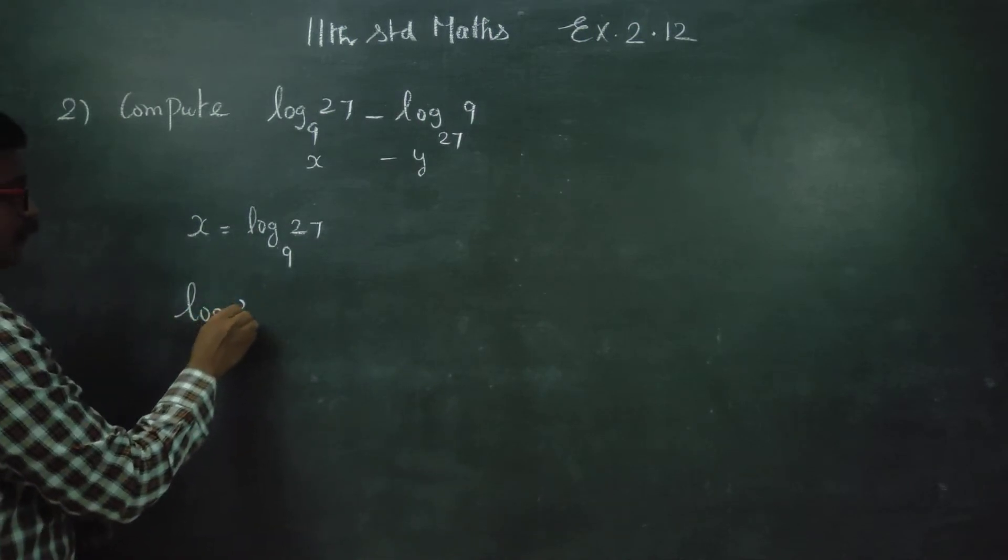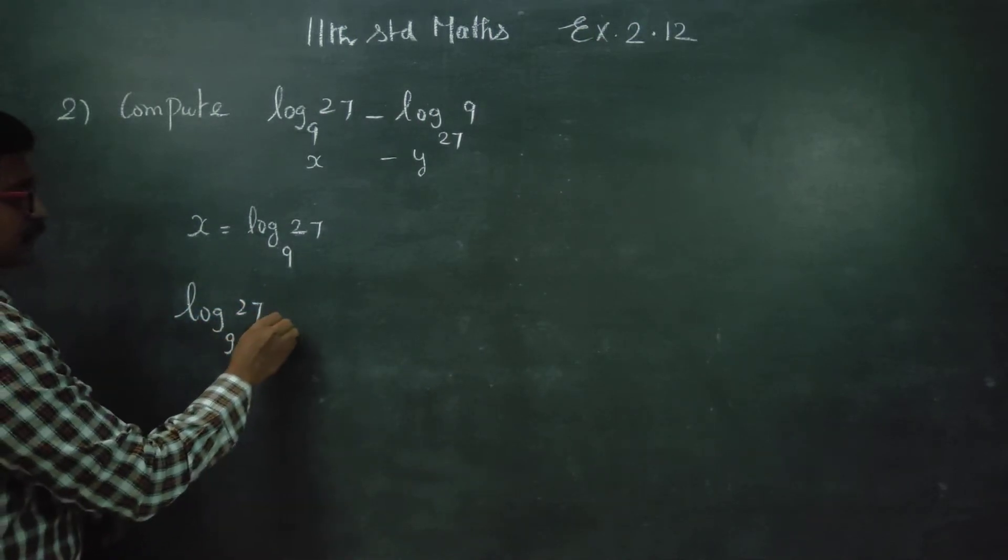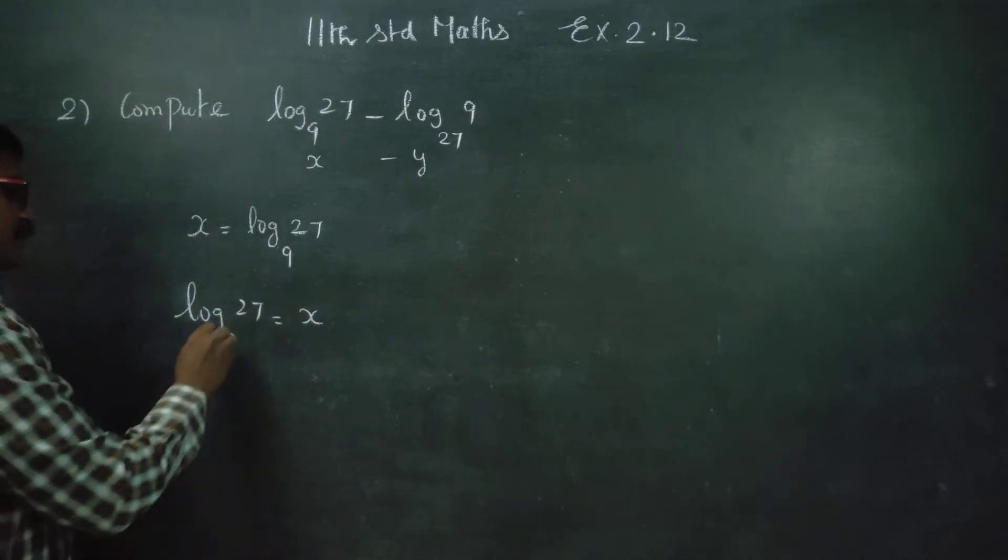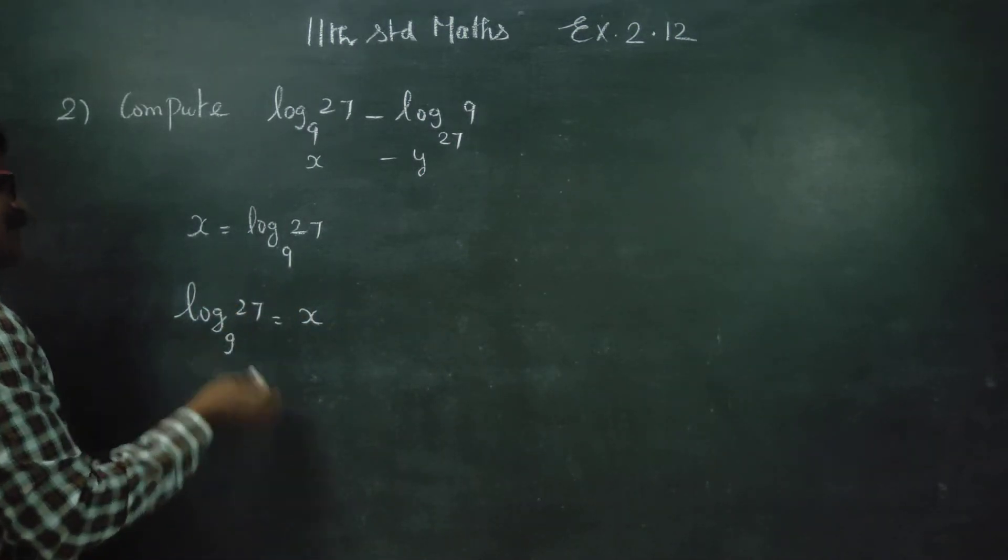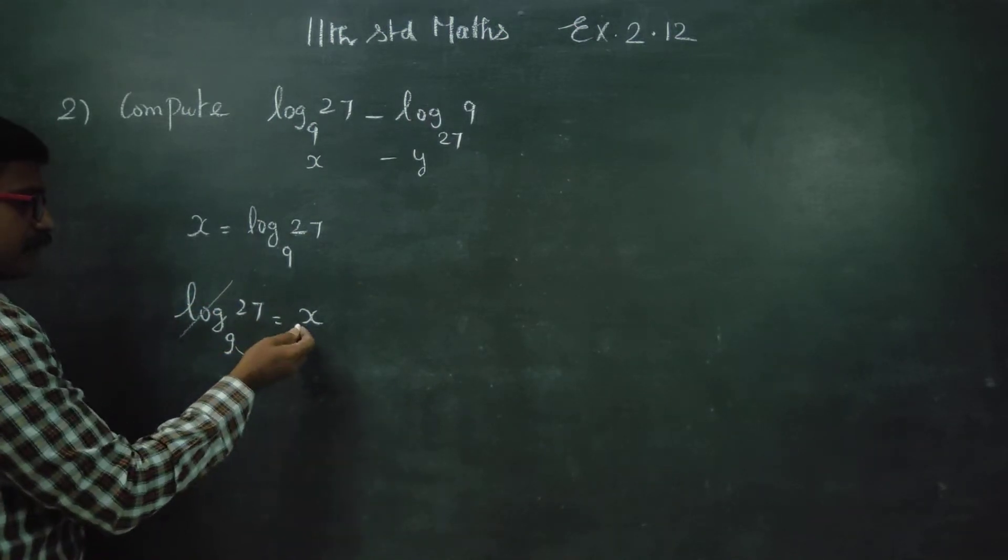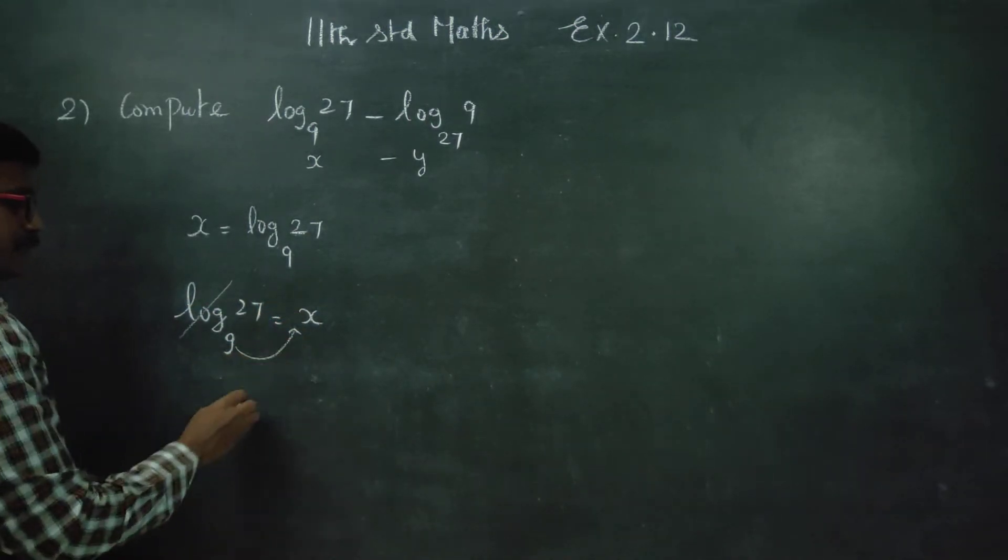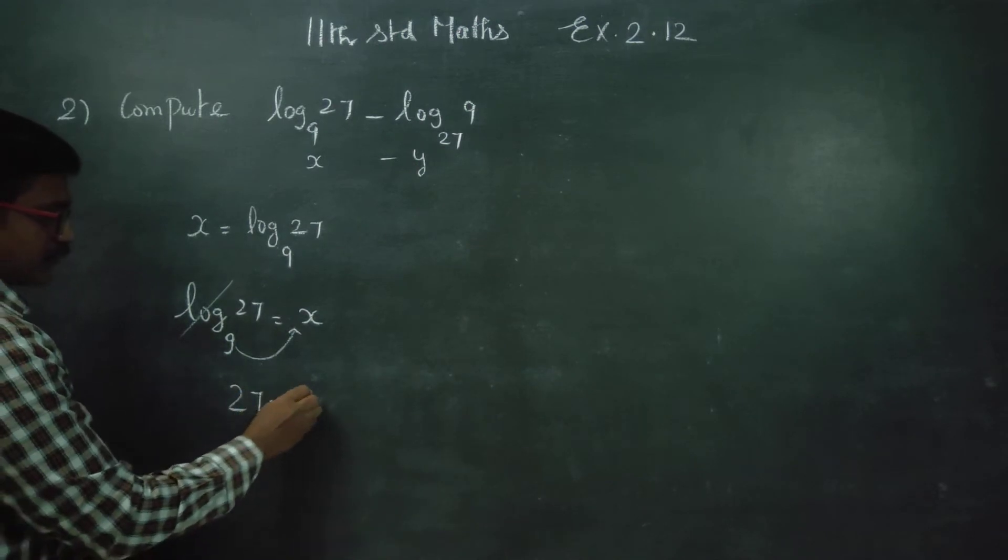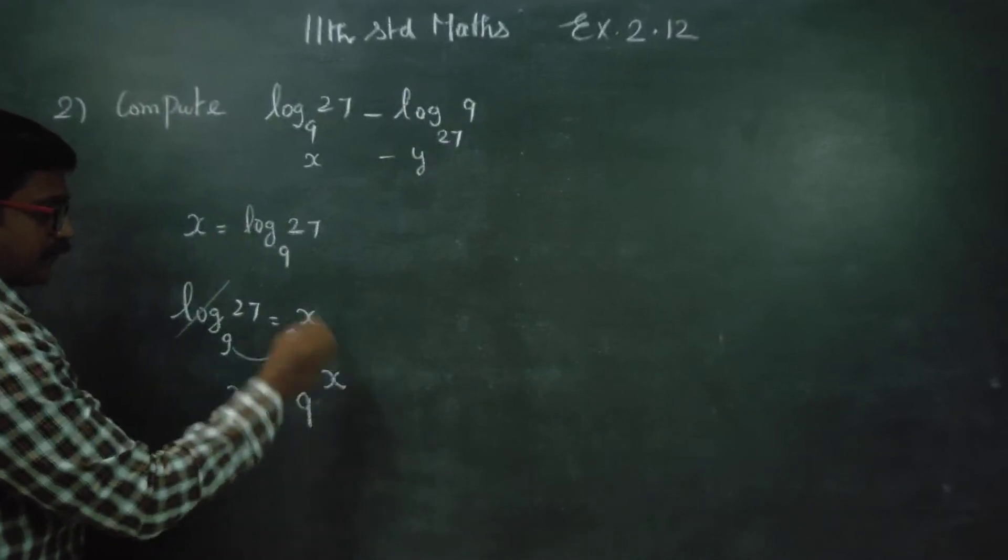Logarithm of 27 base 9 is equal to X. First, I am going to start with this exponential formula. Log 27 base 9 is equal to 9 power X. 27 is equal to 9 power X.